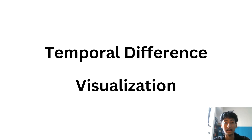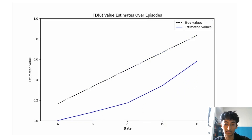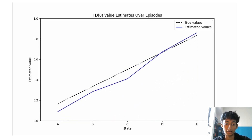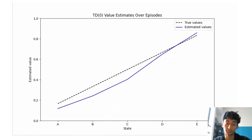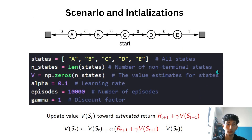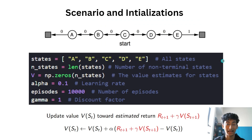Before we head into the code and the visualization, I want you to look at this particular GIF that I have shown, and in this video I'll tell you how I did that and what the principle behind it is. But first, let's talk about the scenario and initializations — specifically the state space — before we get into the actual coding part and the TD zero update rule. It's important you understand the state space before we head into it.